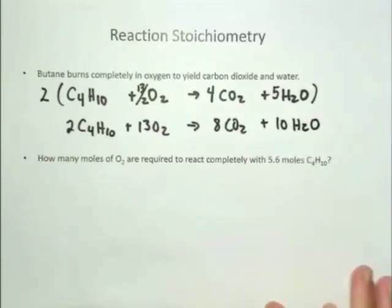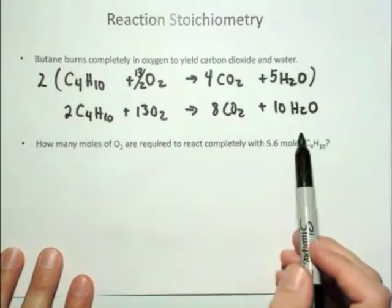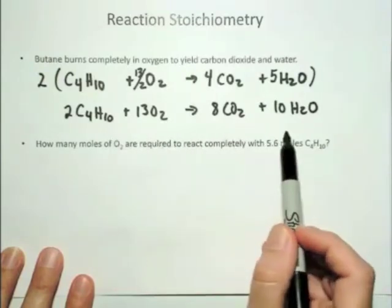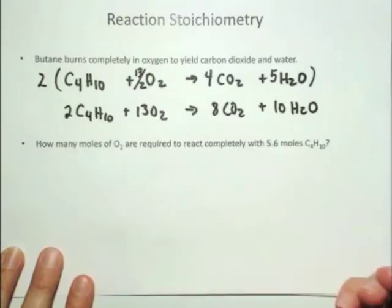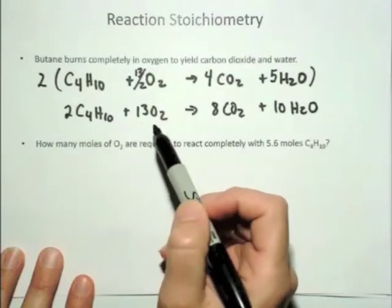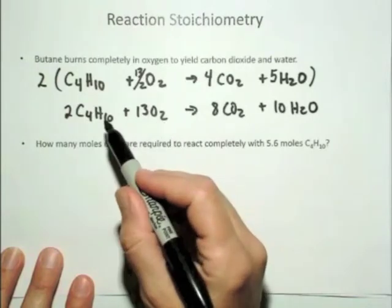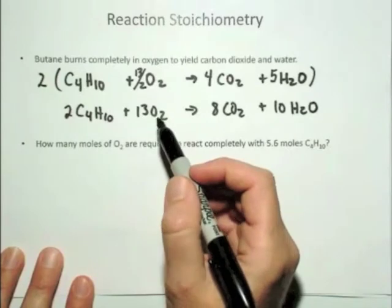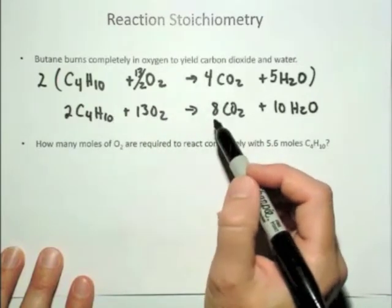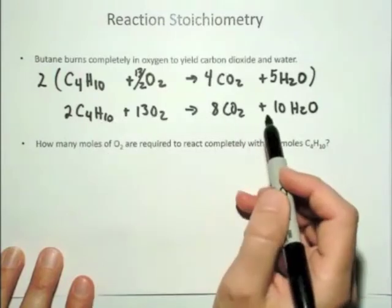Now I have a balanced chemical reaction. For reaction stoichiometry, it's a way of using the balanced chemical equation to predict how many moles or grams of product or reactant you get given a certain amount, because this balanced chemical reaction tells me the whole-number ratios of molecule to molecule to molecule. Two moles of butane will combust completely with thirteen moles of oxygen — a ratio of two to thirteen. Every time I completely combust two moles of butane, assuming I have at least thirteen moles of oxygen, I'm going to produce eight moles of carbon dioxide and ten moles of water.